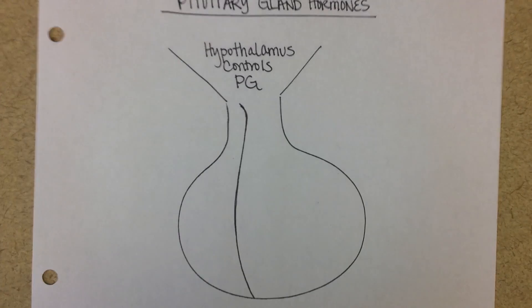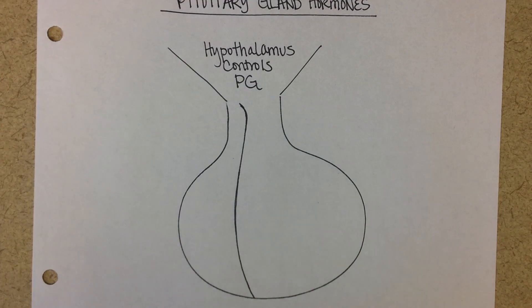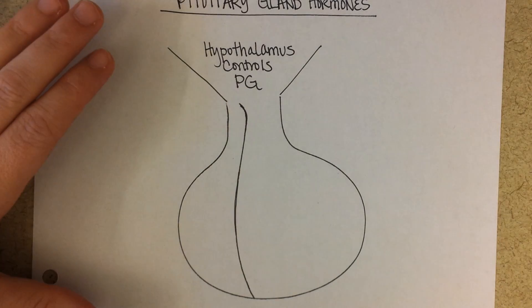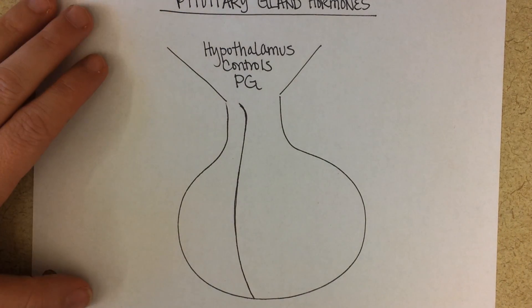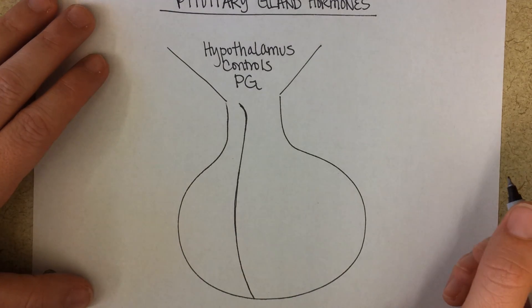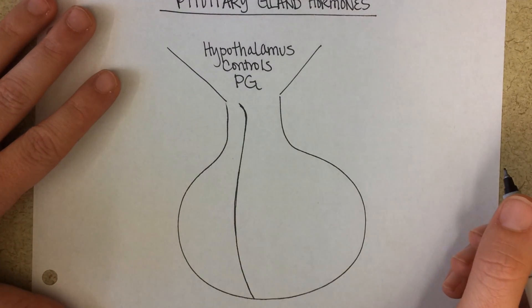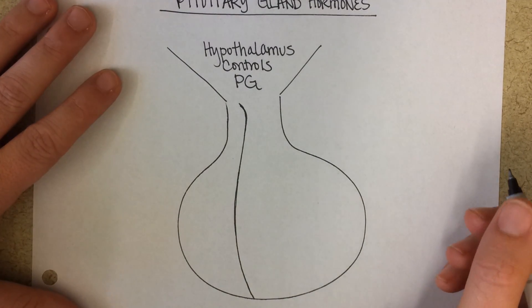We're going to go over all of the different hormones that are either made or released from the pituitary gland, and we'll put them in different colors for their names, their targets, and their functions.